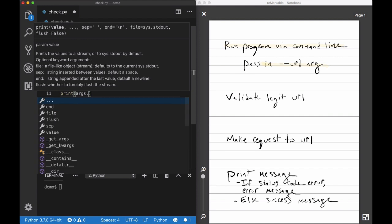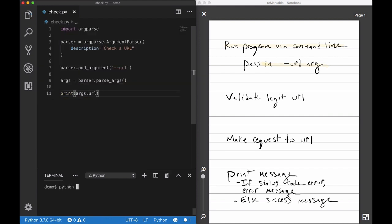Then we need to parse the arguments. And at this point I want to run the program to see if it does what I think it does. So if I run python check.py dash dash URL foo, it prints back args.url, which is foo. So great.